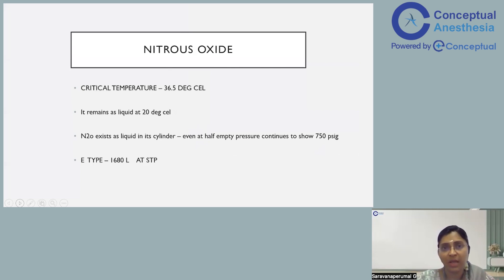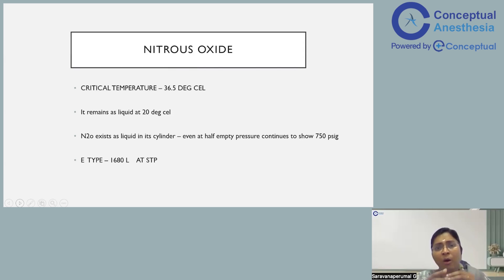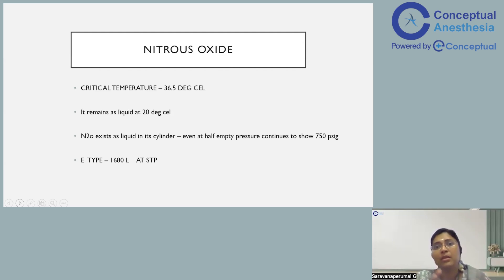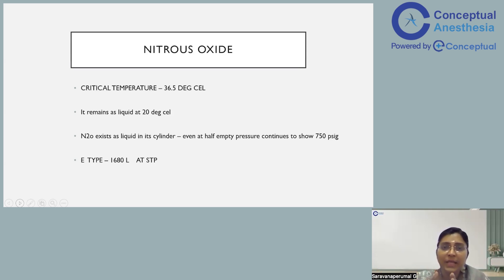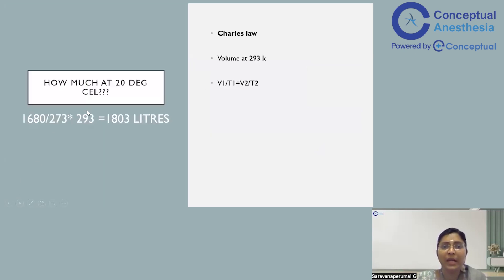What are the practical applications of Charles's law? As mentioned earlier, the critical temperature of nitrous oxide is 36.5 degrees Celsius, so it remains as a liquid at 20 degrees Celsius. In a nitrous oxide cylinder, until all the nitrous oxide converts into vapour, the pressure gauge will continue to show 750 PSIG. Only when the liquid is completely replaced by vapour will the PSIG begin to fall. Therefore, the Bourdon's pressure gauge does not act as a content gauge for nitrous oxide until it is completely in vapour form. In an E-type cylinder, there are 1680 litres of nitrous oxide at standard temperature and pressure.